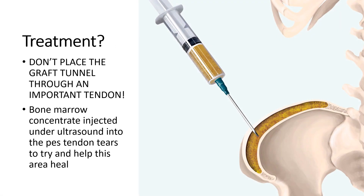So the treatment — well, number one is first, don't do this. Don't place a graft tunnel through an important tendon. But if it does happen, bone marrow concentrate is what we'll be using. That's a same-day stem cell injection procedure under ultrasound guidance into those pezanserine tendons to try to heal that area.